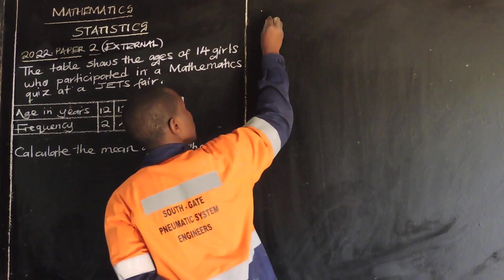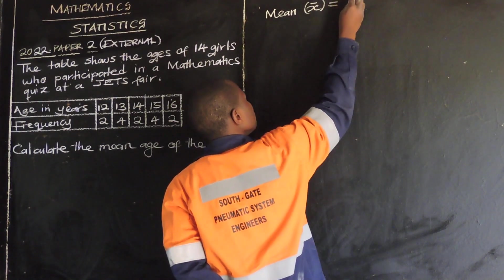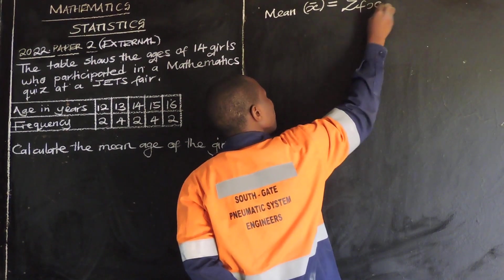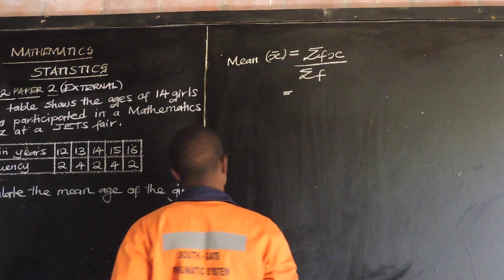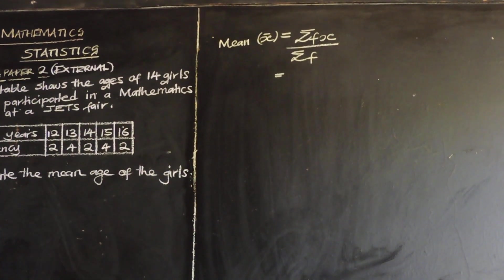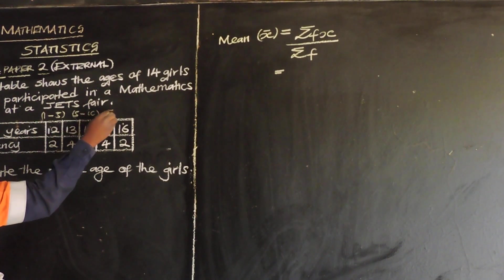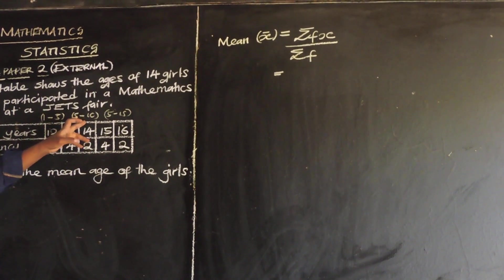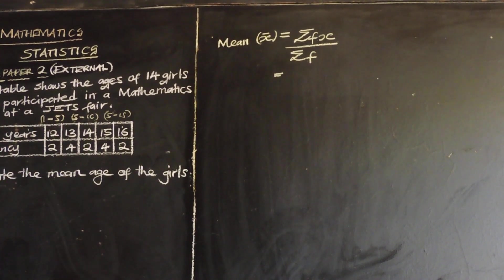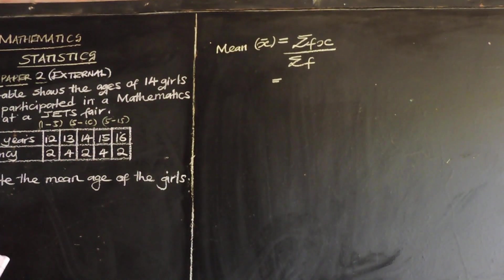So as quickly as possible, we know mean is denoted by, so mean is denoted by x bar is equal to the summation of the frequency multiplied by the midpoint over the summation of the frequency. So we can move on and say, so in our case, this one is simple, very, very simple.